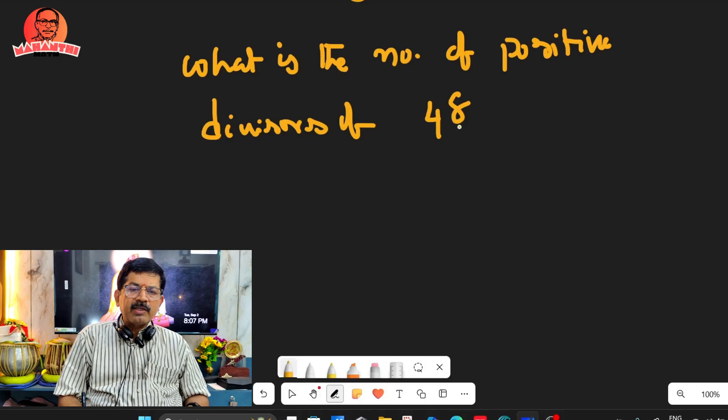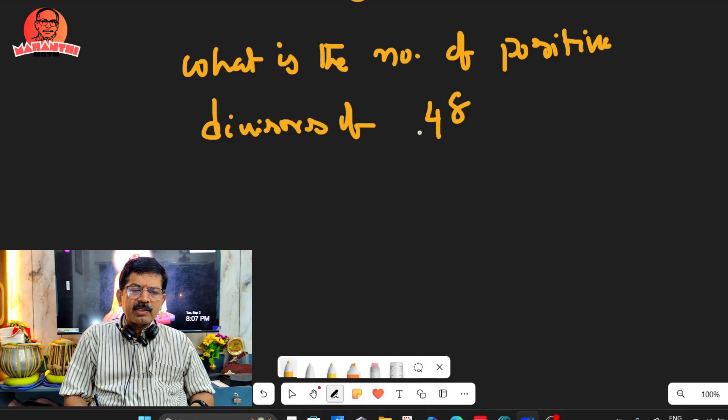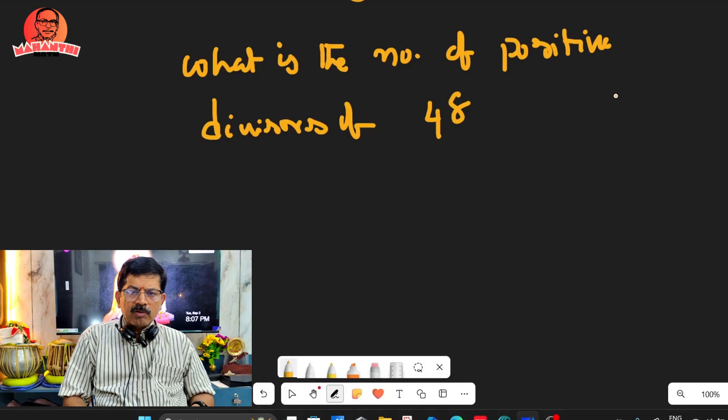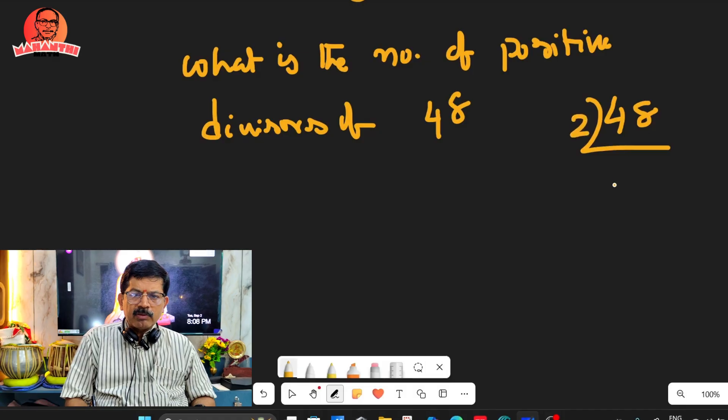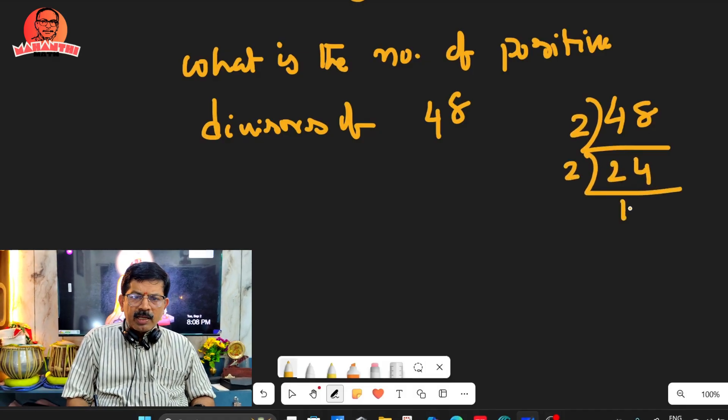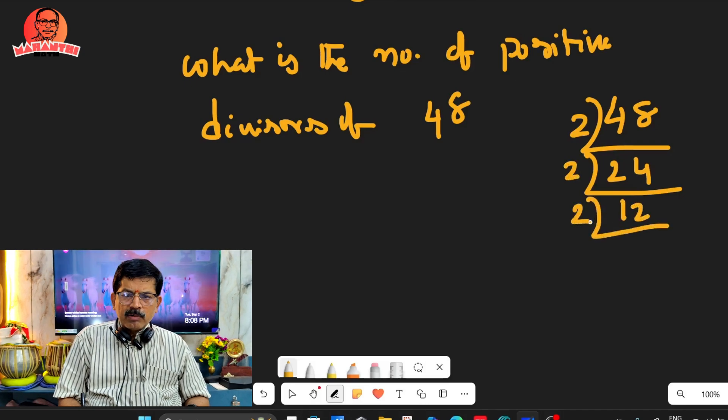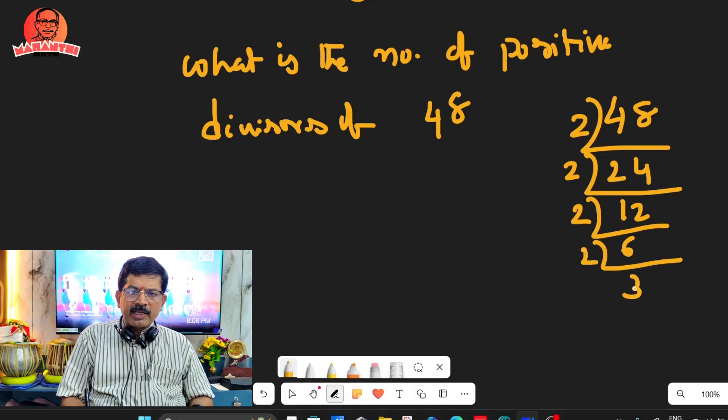Now, what is the number of positive divisors of 48, including 1 and 48? First you write the prime factorization. It is divisible by 2, so divide by 2, again by 2, again by 2, again by 2, and lastly 3 came. So you can write 48 = 2^4 × 3^1.